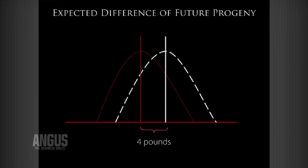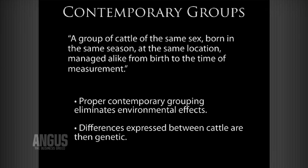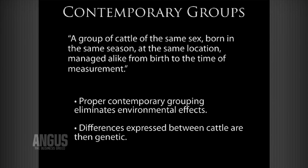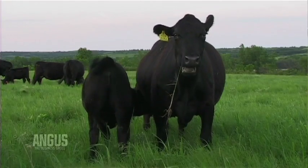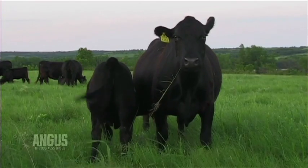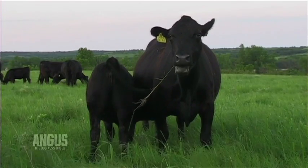One of the foundation components of EPDs is contemporary grouping. A contemporary group is a set of animals managed alike, treated alike, same gender, exposed to the same environmental conditions. This is a foundation component in arriving at the EPDs that you see in publications or on the website. This is particularly important when utilizing phenotypic data — birth weights, weaning weight, yearling weights — that the contemporary group is properly defined, which gives you the best EPDs to use in your herd.